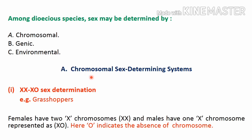The first case is the XX/XO sex determination system. The example here is grasshoppers. Females have two X chromosomes, represented as XX, whereas males have only one X chromosome, represented as XO. Here O represents the absence of any chromosome — O is not a chromosome but indicates that there is no chromosome paired with the X chromosome.